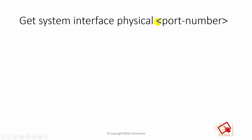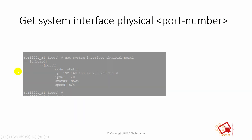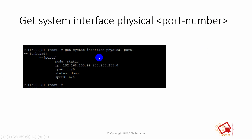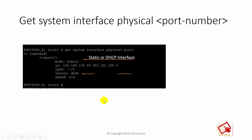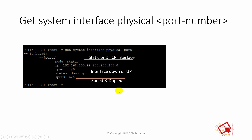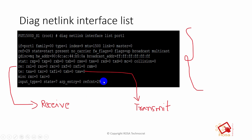If you specify a particular port number after 'physical,' it gives details only for that port. For example, 'get system interface physical port1' will only show details about port 1: whether it is static or DHCP, the status (up or down), and the speed and duplex. In my case, speed is showing as 'any' because the interface is down.